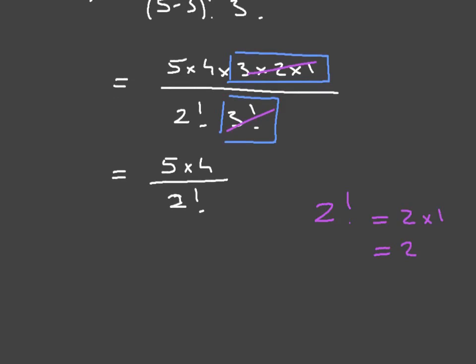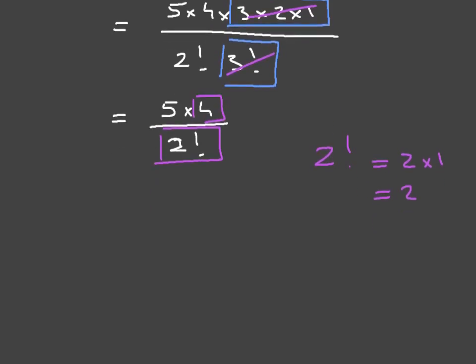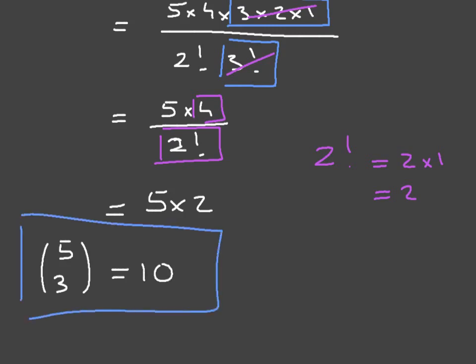The second thing to notice is that since factorial of 2 is simply equal to 2 times 1, that's just equal to 2. So this factorial 2 on the denominator is going to simplify with this 4 here and we're just going to be left with 5 times 2. Finally, we can state that this binomial coefficient is equal to 10. Let's look at another example, in this case I'll use a slightly different notation.